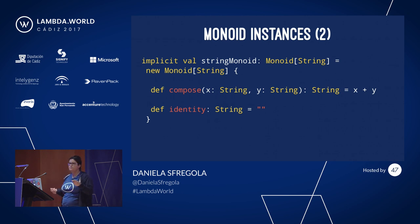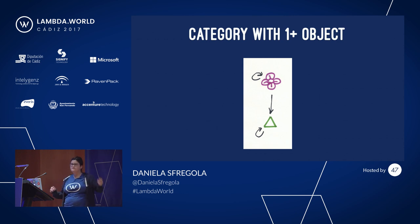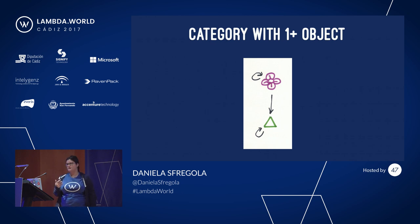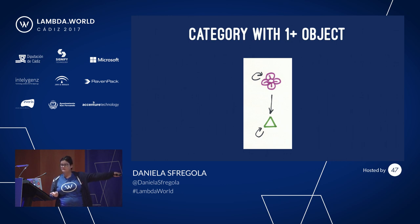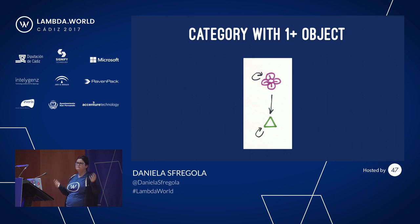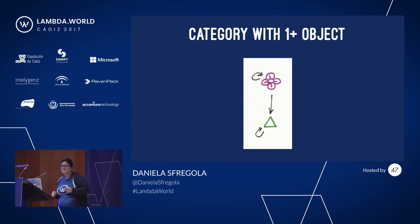Let's do some more interesting stuff. Let's assume I have this beautiful category that has a flower and a little triangle — this is my category. It is a category because I have an identity for every object and I have an arrow that connects my objects. I should also prove that composition works and that composition is associative, but we can leave that to the mathematicians.